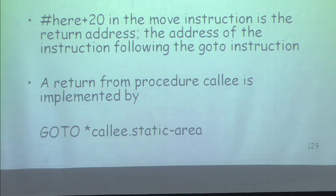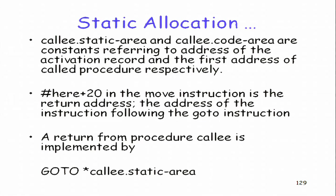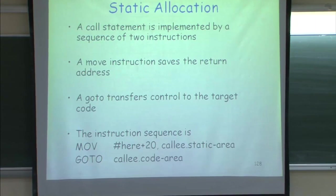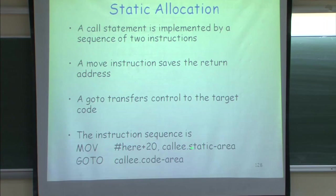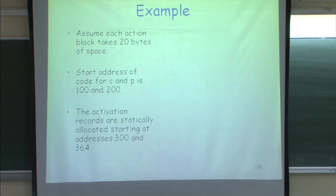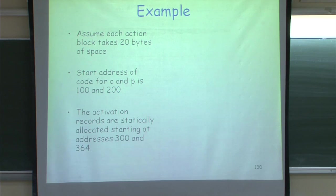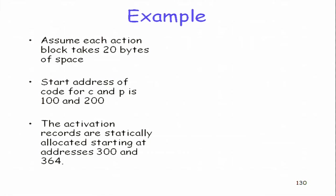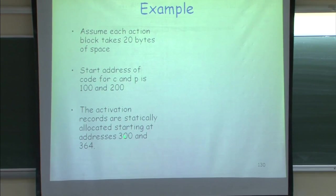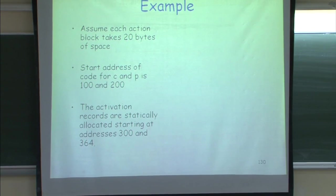In static allocation, the static area and code area are constants referring to addresses. They refer to the address of the activation record and the code area respectively. Since I am doing static allocation, these addresses are known at compile time. Let us assume each action takes 40 bytes, the start addresses of the code for C and P are 100 and 200, and activation records are statically allocated at locations 300 and 364.